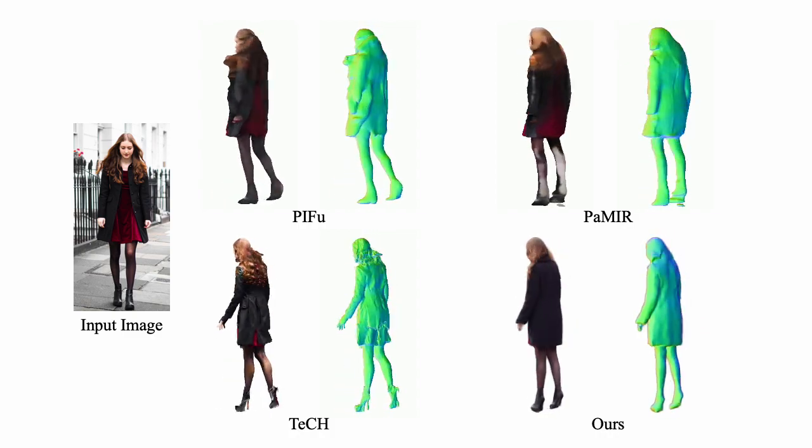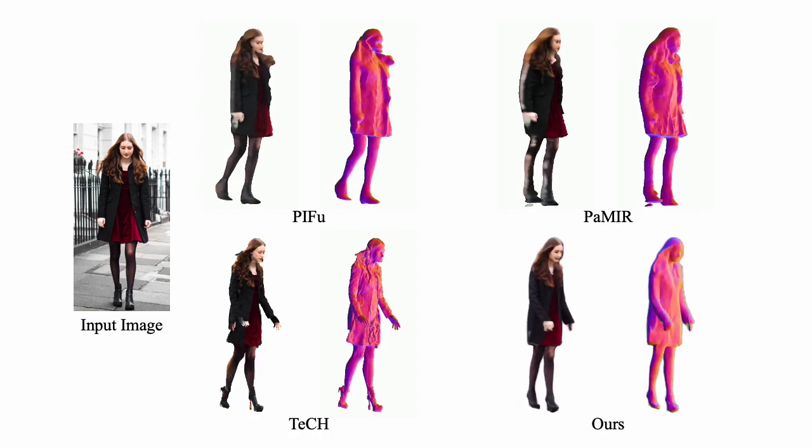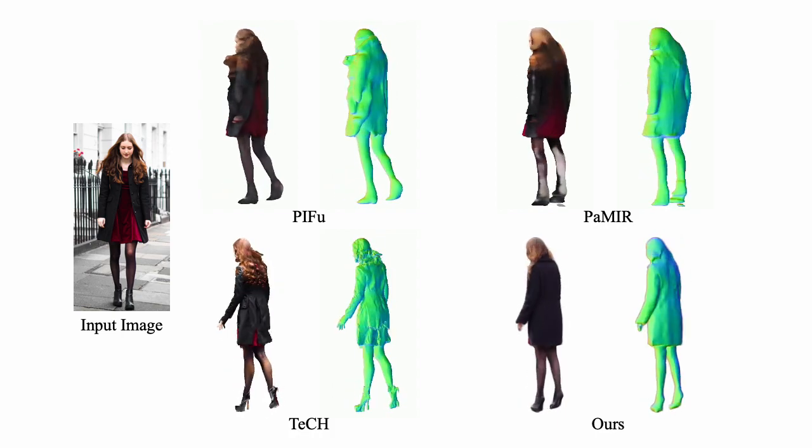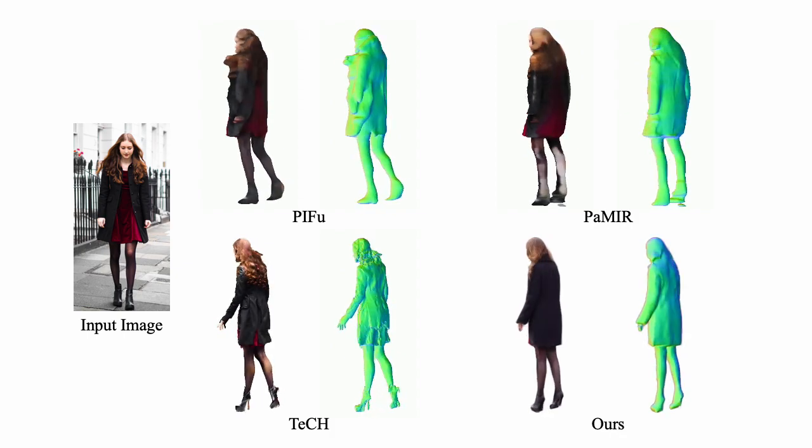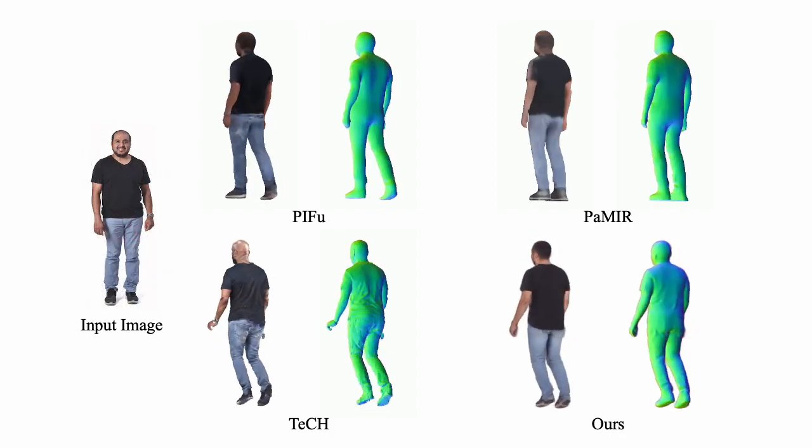By contrast, TeCH can generate detailed textures in unseen areas due to SDS-based text-guided optimization and pre-trained diffusion model priors.